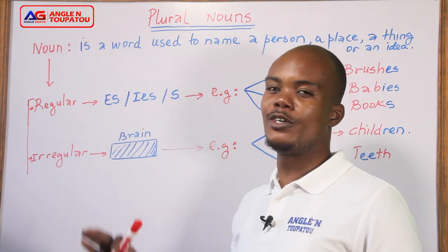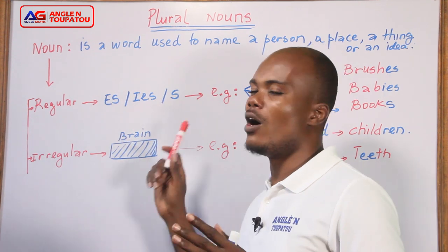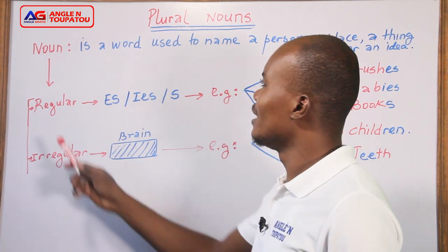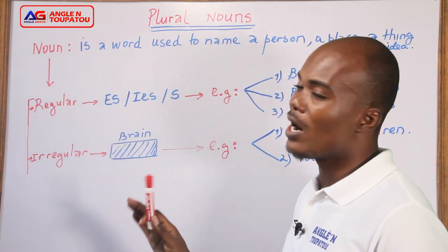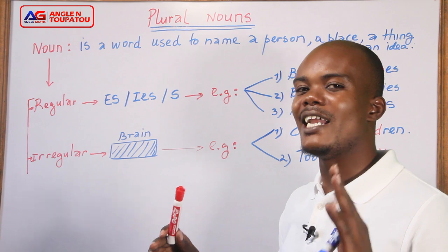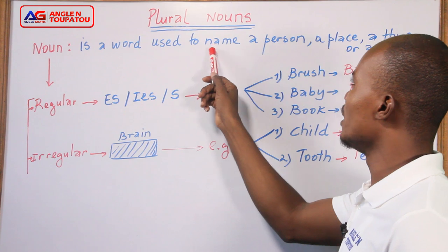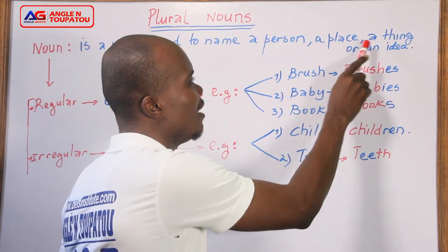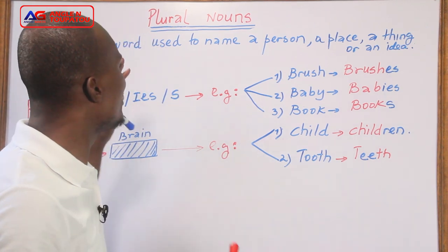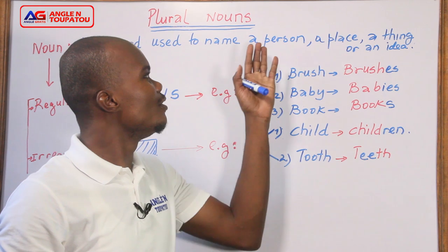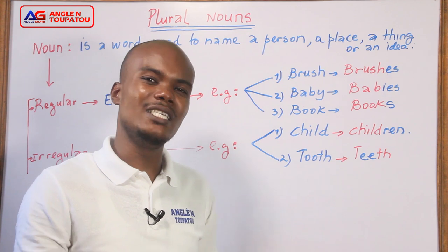Welcome back, we're gonna learn about plural nouns — koto pa l apren de plural de non en Angle. But let me tell you, noun that you see here, you see how it is written and what it means exactly. Kis a noun li sinifi? In English, they say a noun is a word used to name a person, a place, a thing, or an idea. Yo di ke yon non se yon mo ki nomme yon person, yon liye, ou bien yon chose, ou di mwes yon ide.